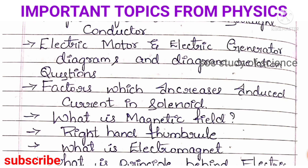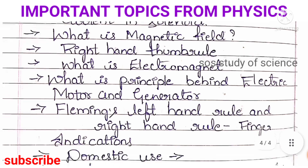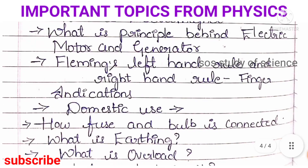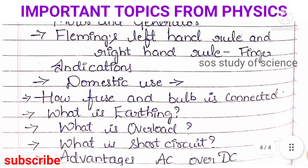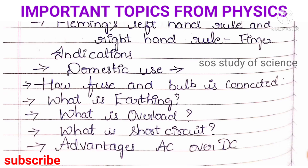You have to study what is meant by magnetic field, right hand thumb rule, what is meant by electromagnet, the principle behind electric motor and electric generator, Fleming's right hand rule and Fleming's left hand rule, and what these fingers indicate. Also learn about domestic use — how fuse and bulbs are connected, what is earthing, what is overload, what is short circuit, and the advantages of AC over DC. These are frequently asked questions in examinations.